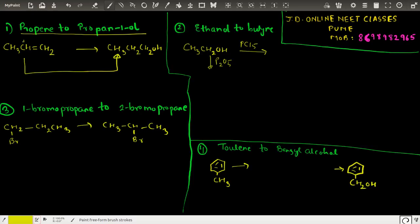So the reagent that we have over here is B2H6, hydroboration-oxidation: B2H6, H2O2 in presence of THF. This will bring about the anti-Markovnikov addition because we want the OH to come at the first carbon.